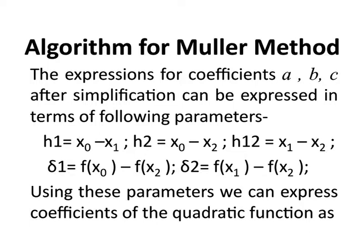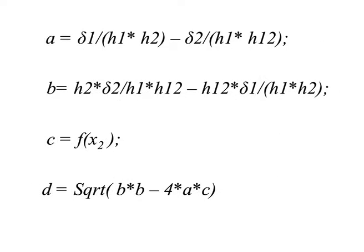The algorithm for the Muller method can be written using all these mathematical derivations. We have expressions for coefficients a, b, and c. To simplify the representation, we define additional parameters: h1 is the difference between x0 and x1, h2 is the difference between x0 and x2, and delta1 and delta2 are differences between corresponding function values. With these parameters, the coefficients a, b, and c are given by expressions on your screen. Using these coefficients, we calculate the factor d = √(b² − 4AC) to find the roots of the quadratic.